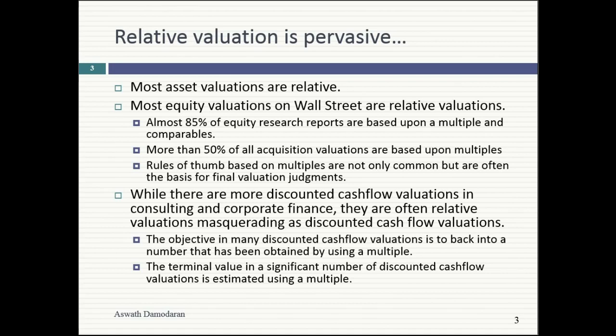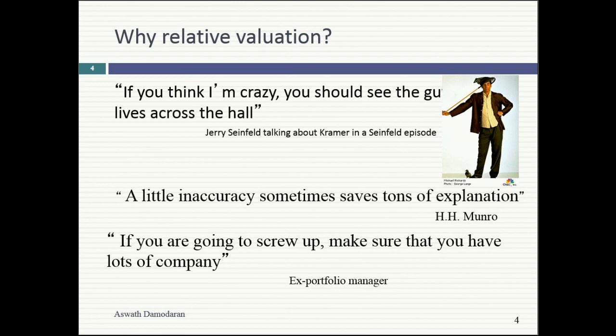I have three possible answers. The first came to me watching a Seinfeld episode — one of Jerry's girlfriends accuses him of being crazy. He says, 'If you think I'm crazy, you should see the guy who lives across the hall from me' — Kramer. Relative to Kramer, who's crazy? We forget how much valuation is selling. Think about the realtor: she's attaching a number because she wants to sell the house. A banker puts a number on a target company because he wants to get the deal done. It's far easier to sell something with pricing than with intrinsic valuation.